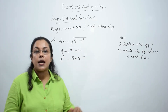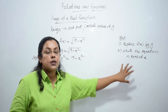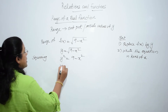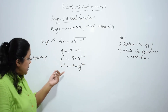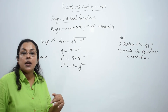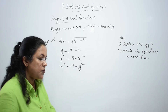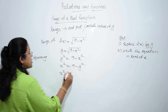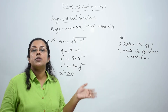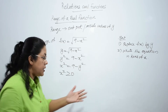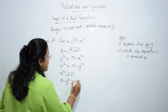We get y² = 9 - x². Now write the equation in terms of x: x² = 9 - y². Since x² is always greater than or equal to 0, the right-hand side must also be greater than or equal to 0: 9 - y² ≥ 0.